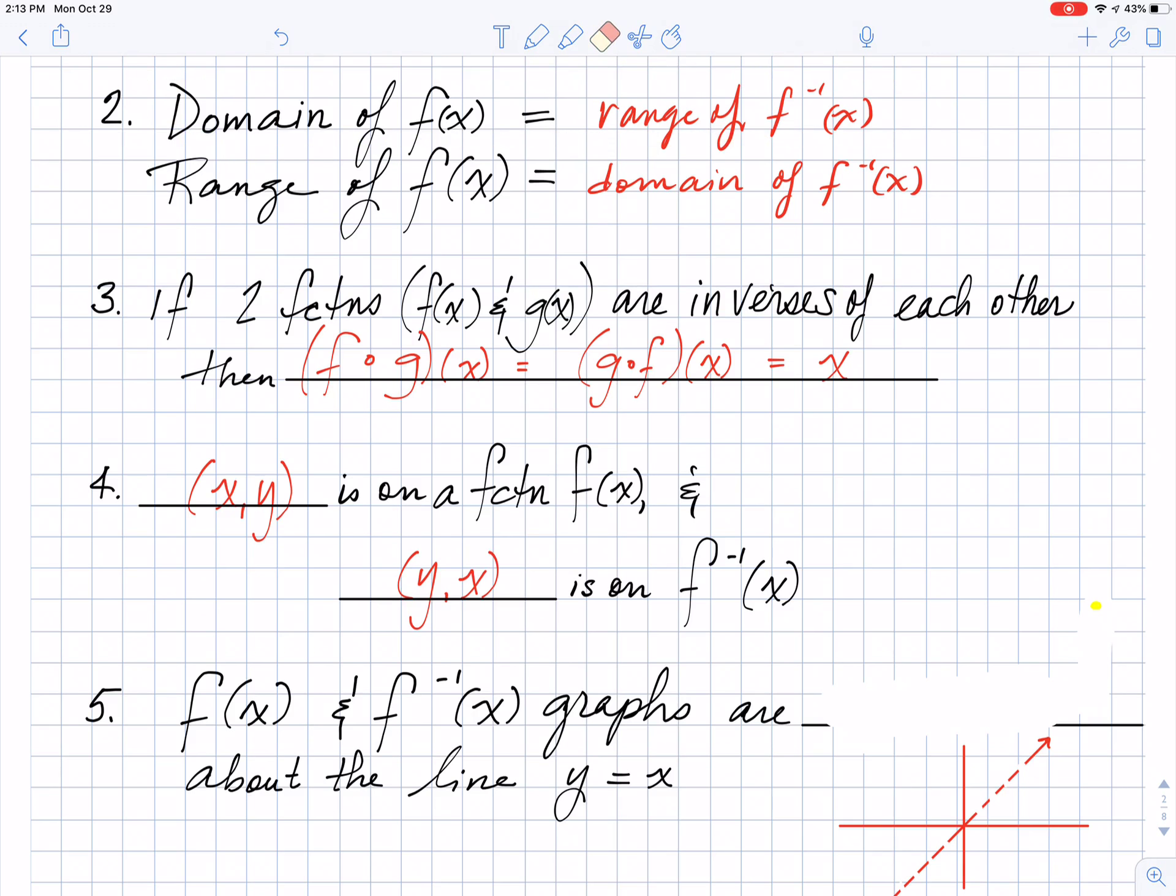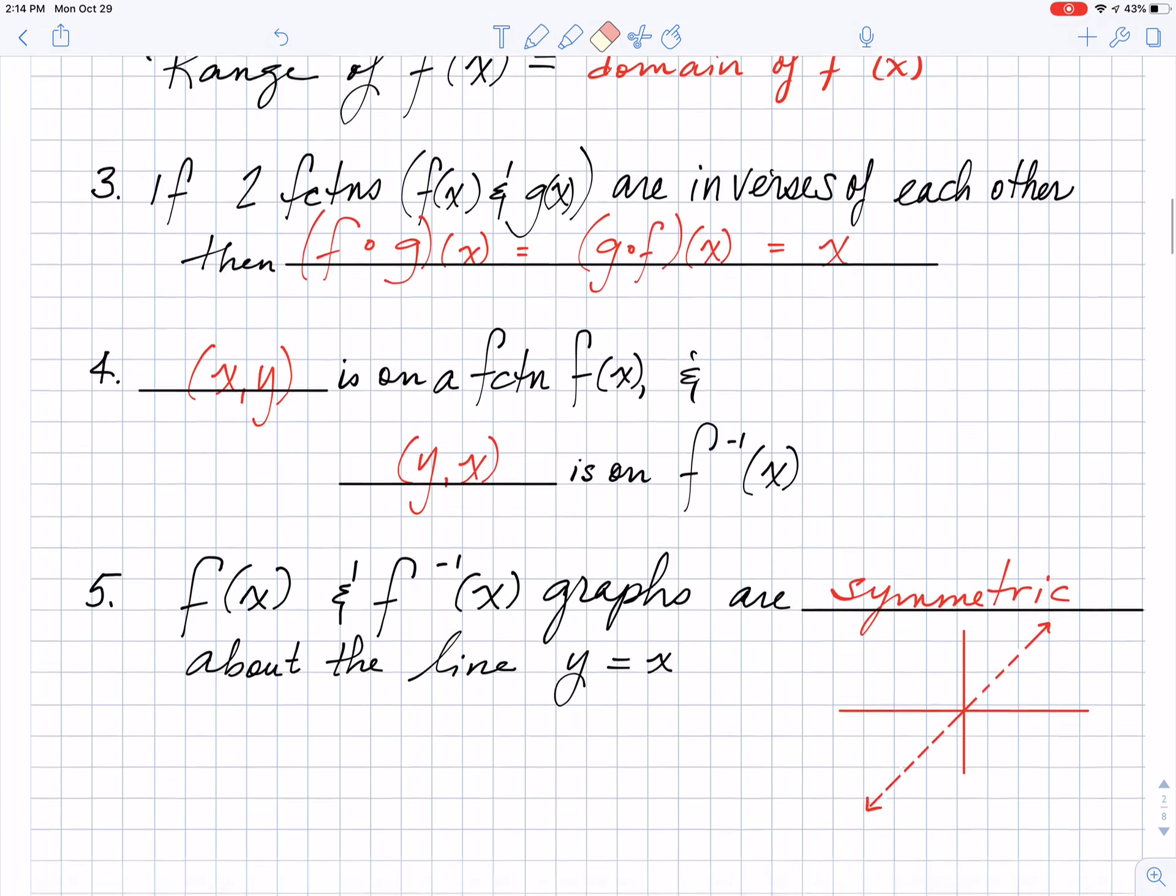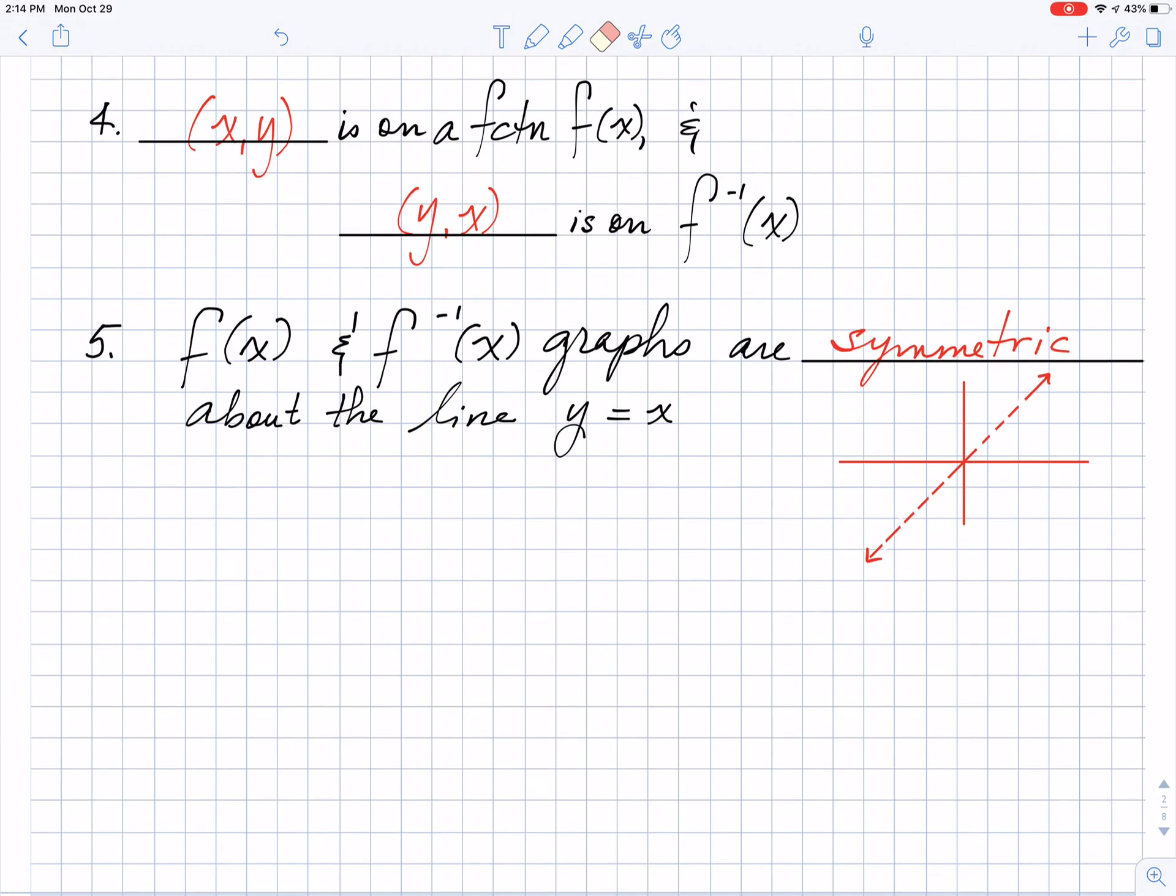Interesting fact number five says that the two functions, the original function and the inverse graph, these guys are going to be symmetric about the line y equals x. Remember we talked about the line y equals x all the way back in our parent functions. So my two graphs will be symmetric about this line.